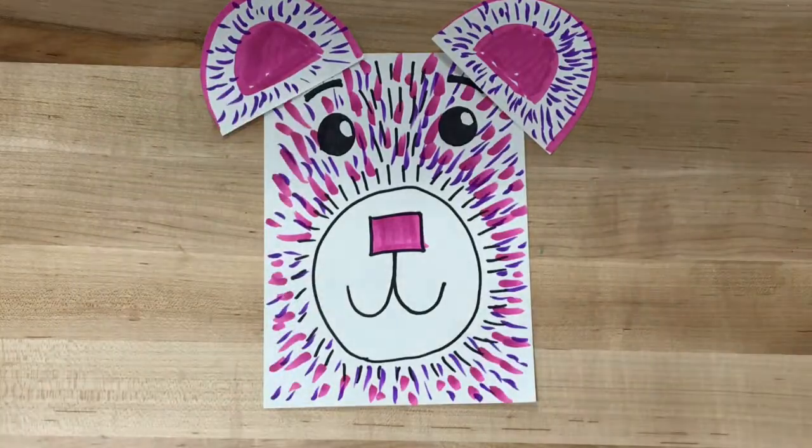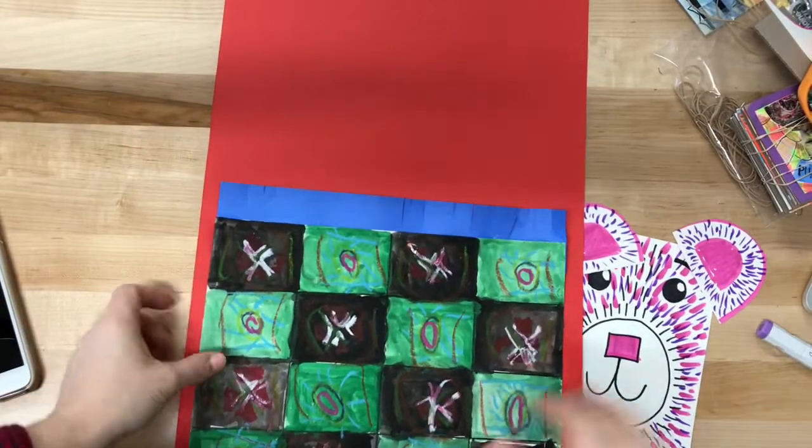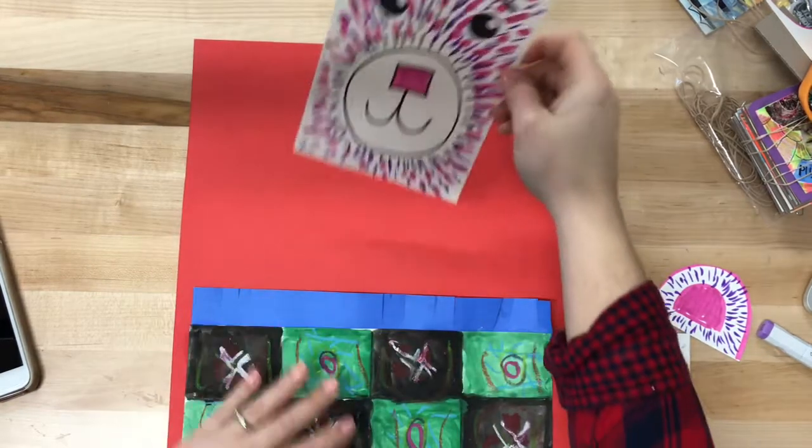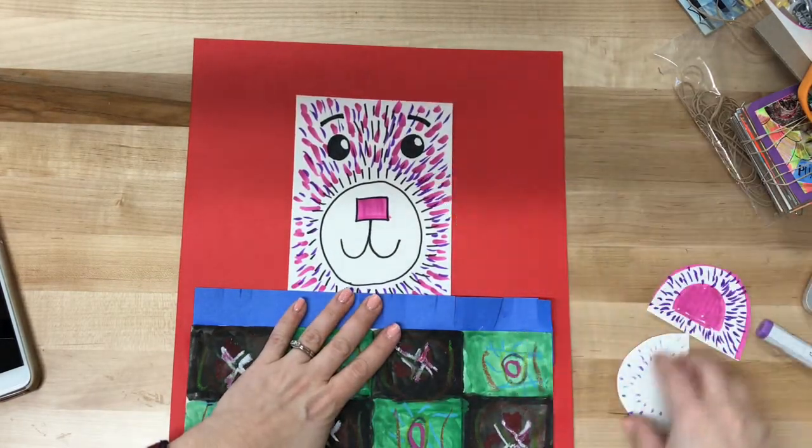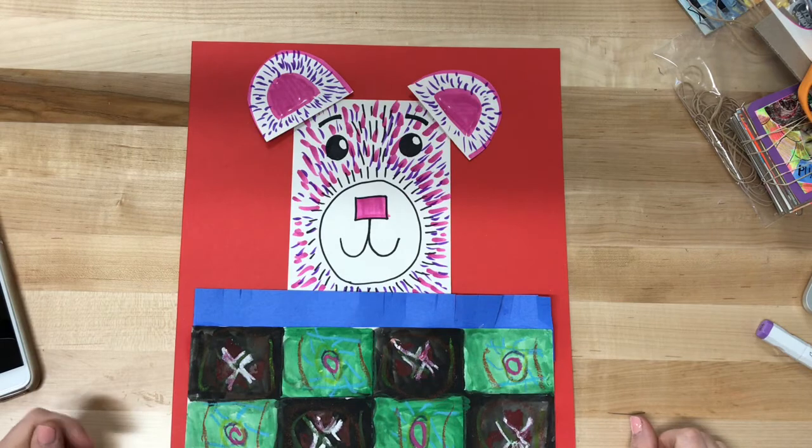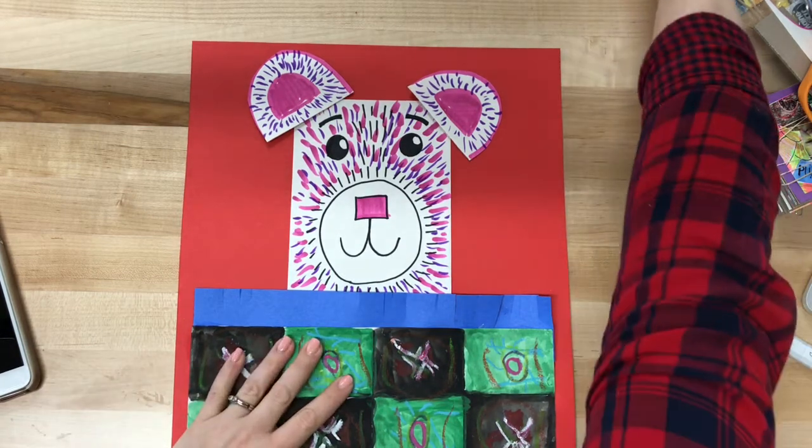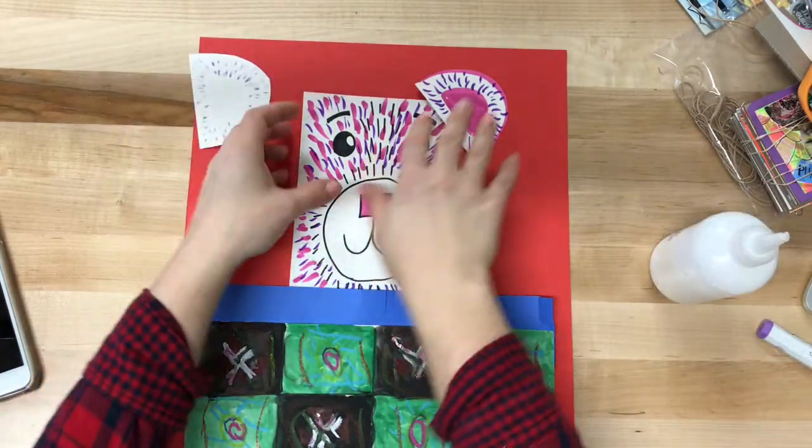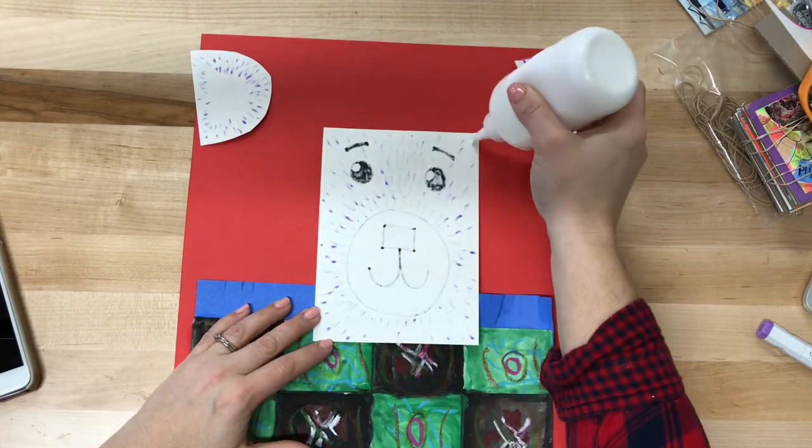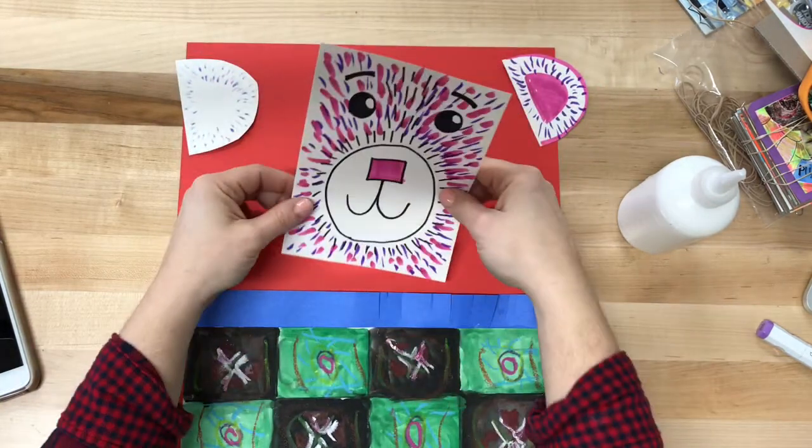I'm not actually going to glue it down because this isn't my artwork, but what you're going to do is put your teddy bear in its blanket and glue down the ears so it looks like he's in his blanket. So cute! Now, any time that you glue something down you're going to go around the edge and then smear, smear, smear and glue it down.